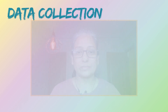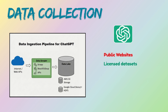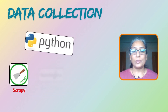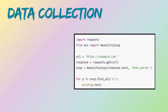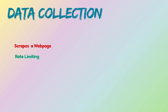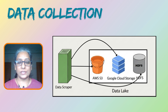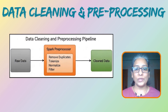Let's start with data collection. The data ChatGPT is trained on comes from multiple sources: public websites, licensed datasets and APIs, and data partnerships. For public websites, tools like Scrapy, BeautifulSoup, and Selenium in Python are used for web scraping. The core snippet shown here scrapes paragraph content from a web page. In real-world scenarios you'll need to handle rate limiting, proxy rotation, and respect for robots.txt to scrape only permitted parts of a website. APIs provide structured data — here is an example of data collection using a REST API.